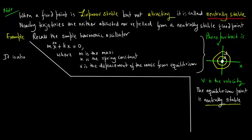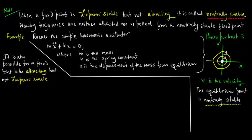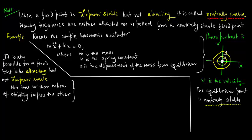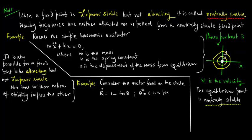It is also possible for a fixed point to be attracting but not Lyapunov stable. Note that neither notion of stability implies the other. Let's consider an example: the vector field on the circle, theta dot equals 1 minus cos theta.